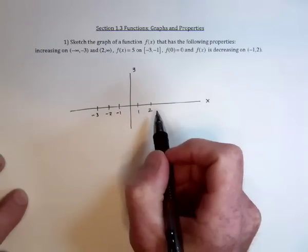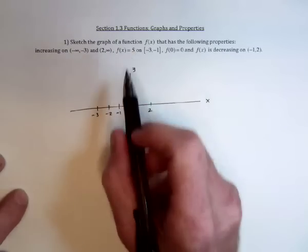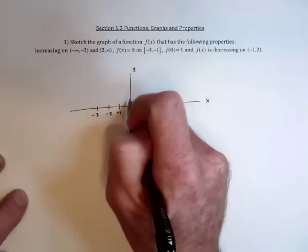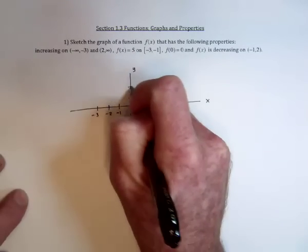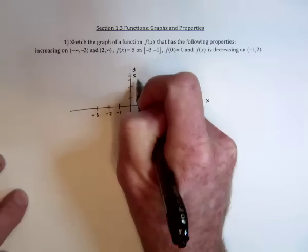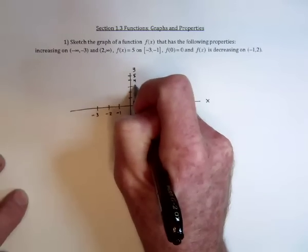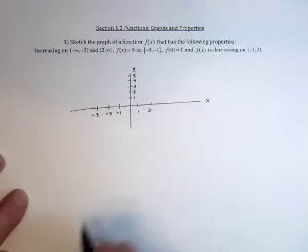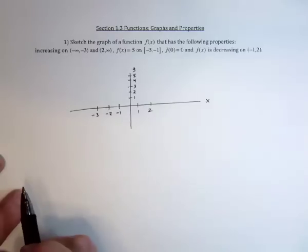And then the y values mentioned are a 5 and a 0: 1, 2, 3, 4, 5. Okay, now start interpreting this information.